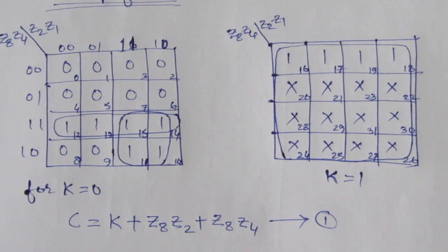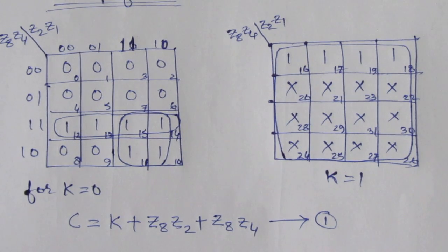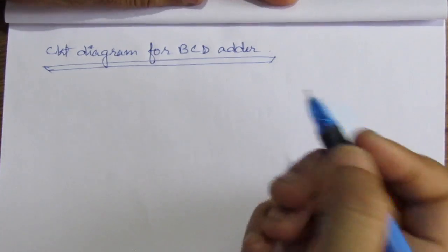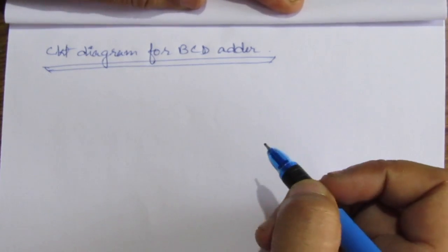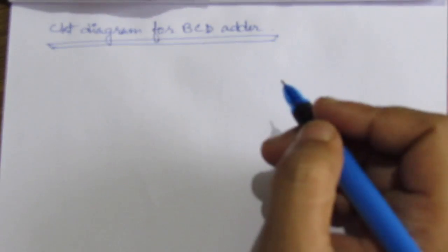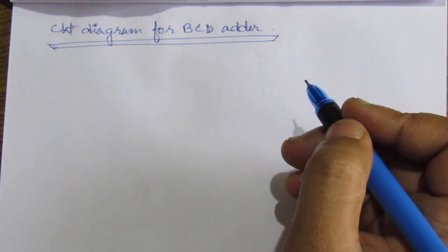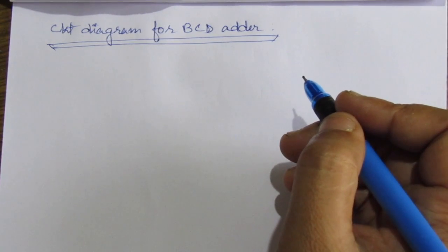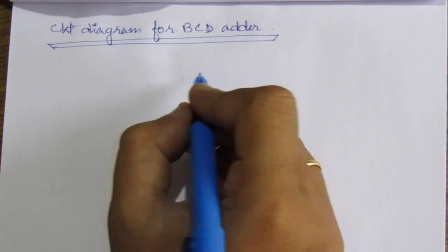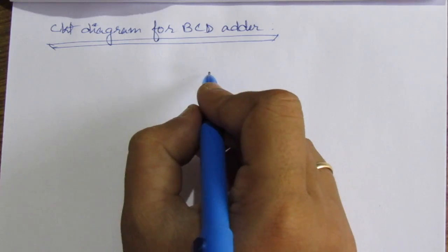Now we will try to make the circuit diagram for this BCD adder. First of all, we have to take one 4-bit binary adder. After that, we will try to convert that binary addition output into the BCD sum output. So let us first draw the binary adder.